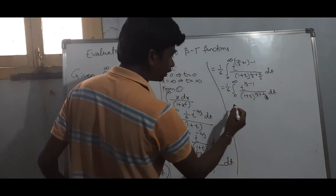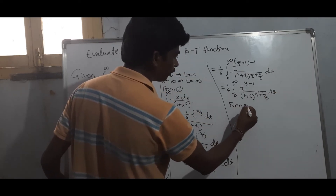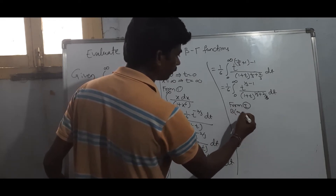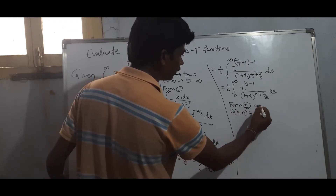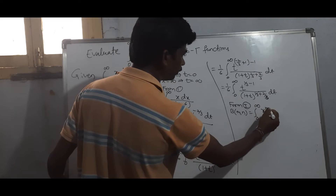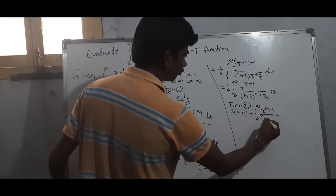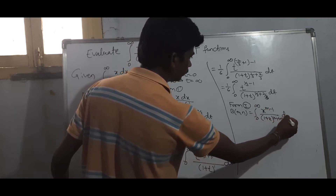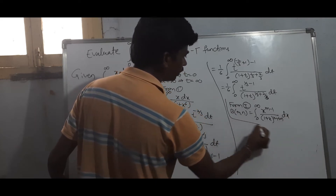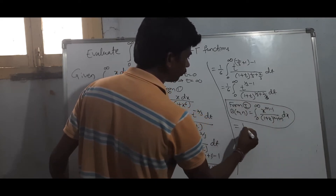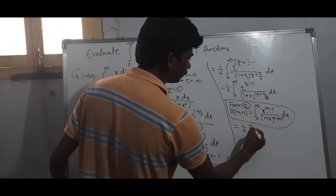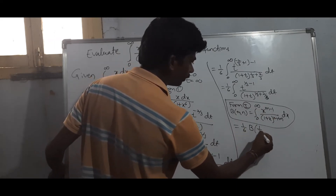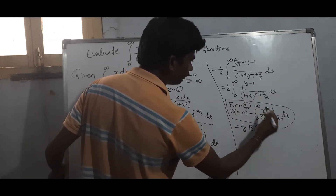We apply Formula 1: beta of m, n equals the integral from 0 to infinity of x to the power (m minus 1) divided by (1 plus x) to the power (m plus n), times dx. Applying this formula here, the result equals (1/6) times beta of (1/3, 2/3).